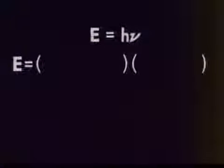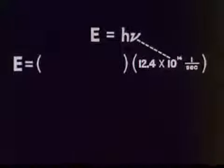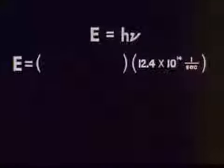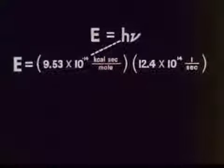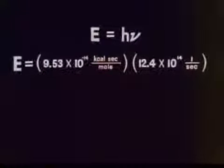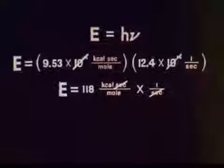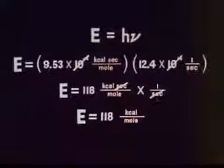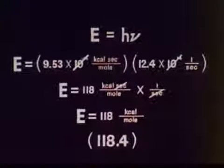We have determined that nu equals 12.4 times 10 to the 14th cycles per second. Multiplying by the conversion factor h — 9.53 times 10 to the minus 14 kilocalorie-seconds per mole — we find the ionization energy of sodium is 118 kilocalories per mole. Considering the simple apparatus which we have used, this value compares well with the accepted value of 118.4 kilocalories per mole.